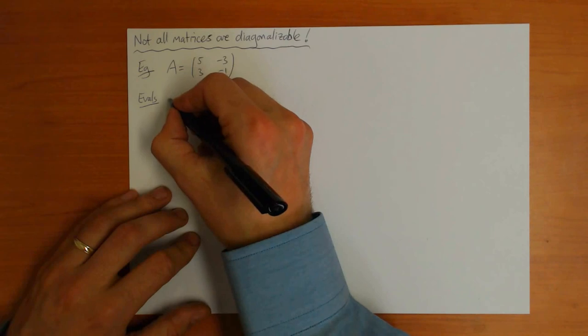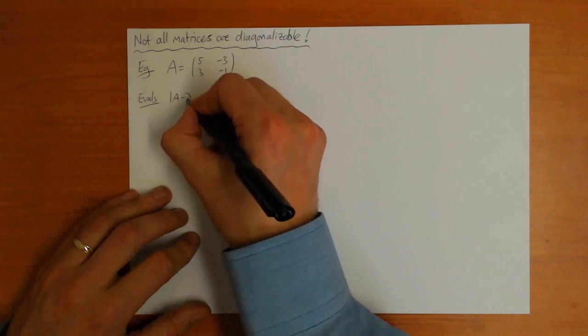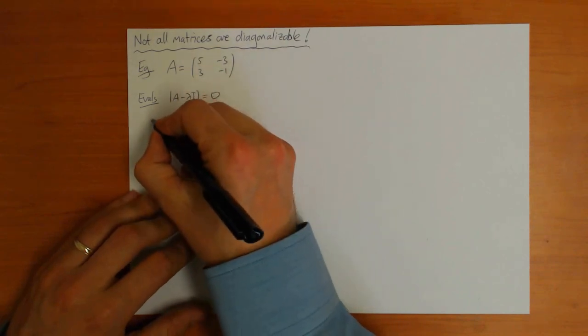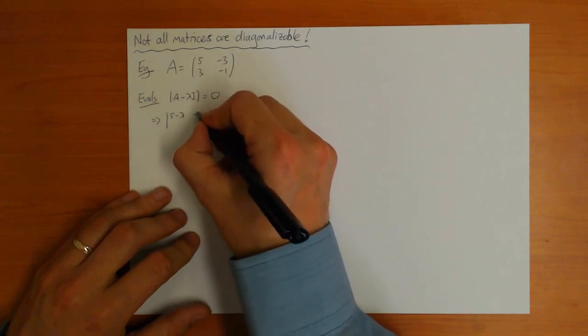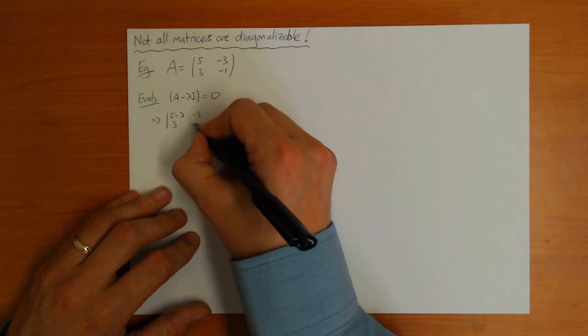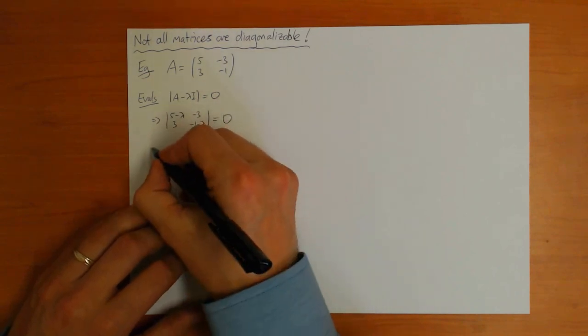The eigenvalues - this means solving A minus lambda I equals 0. So A minus lambda I is 5 minus lambda minus 3, 3 minus 1 minus lambda. That's 0.